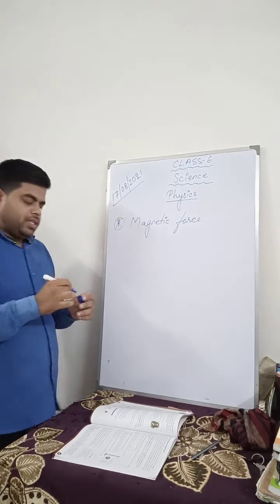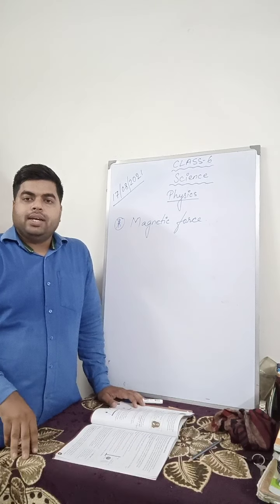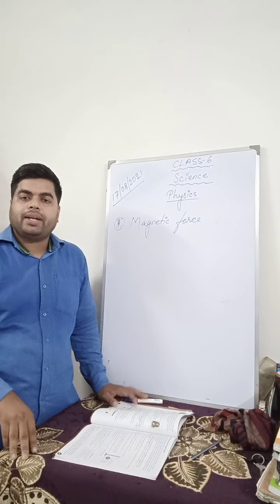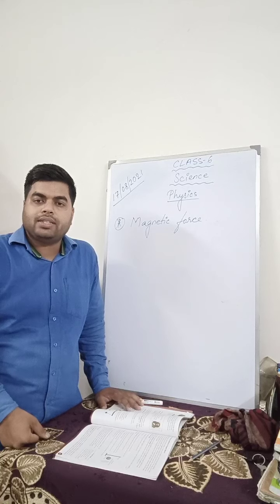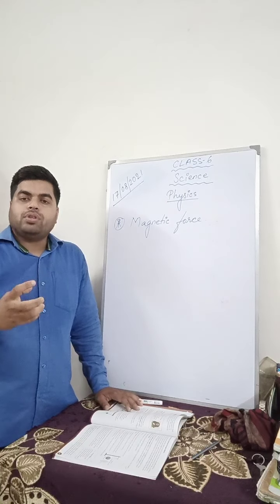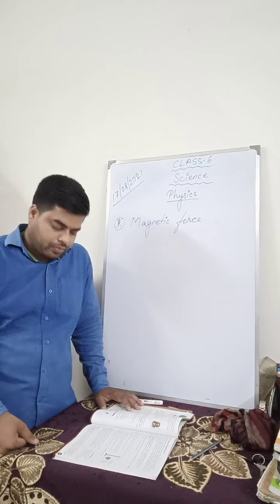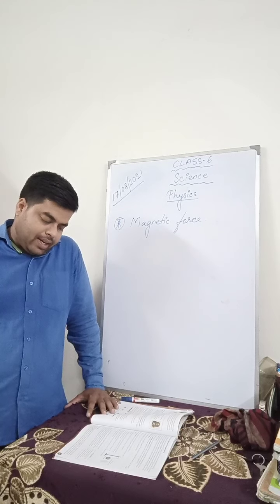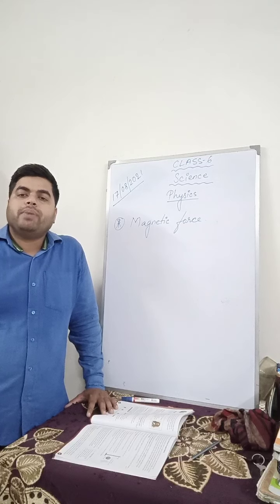You all must have seen a magnet pulling any magnetic substance from a distance. It is not necessary that the magnetic substance and the magnet have to come in contact for the magnet to attract the magnetic substance. This gap — when the force of a magnet acts at a distance — is known as magnetic force. The force exerted between two magnets or between a magnet and a magnetic material like iron is known as magnetic force.